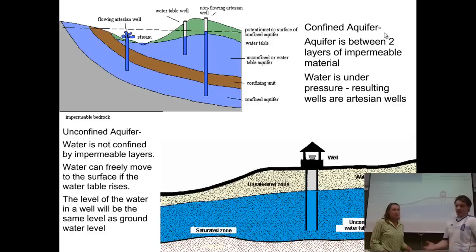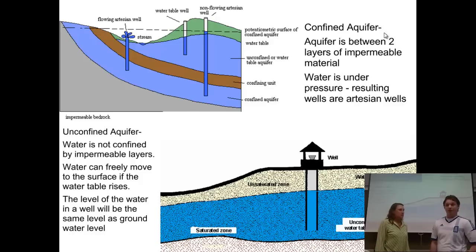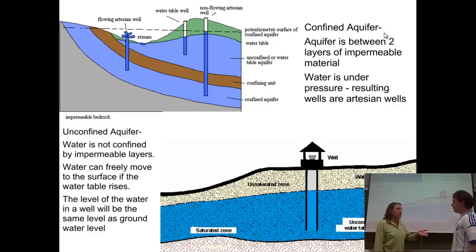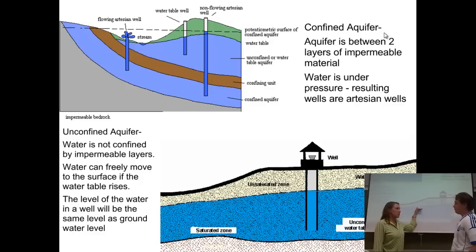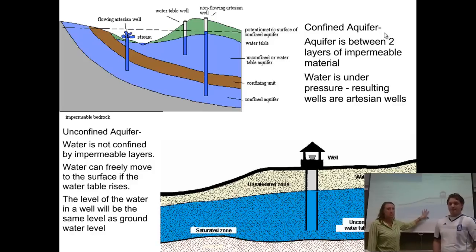Unless it rains or anything like that, the water table fluctuates just like it would normally, and it would do the same in that well — the level would be the same. In the case of rain, the water table level is going to change, and the well levels are going to change, so they're going to change together. That's kind of a simple situation with just a plain well.